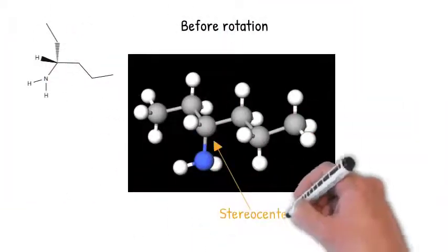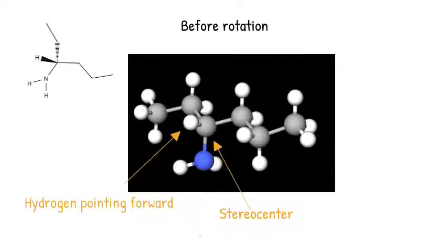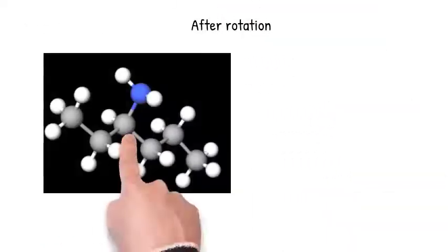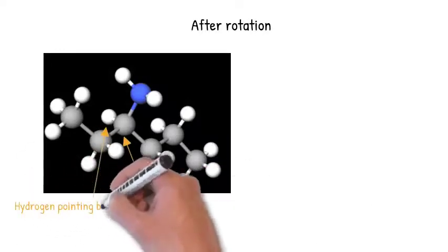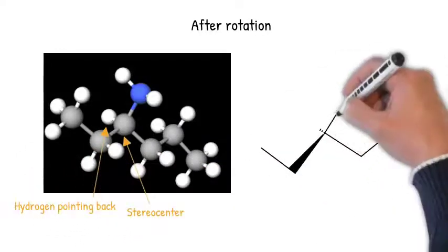First, you could build the molecule using a molecular modeling kit, which most PIP professors will allow you to use on your exams. Build the molecule, rotate it as needed, and then draw a structural diagram of how it looks using the desired rotation.